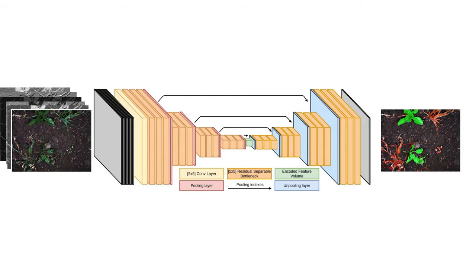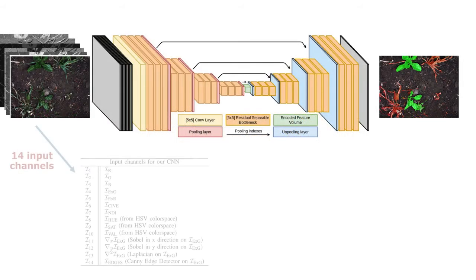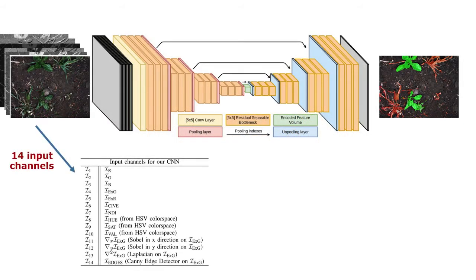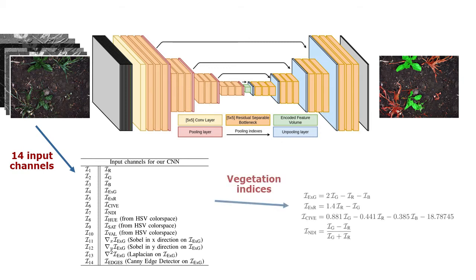These representations include different color spaces, gradients, edges, and several widely used RGB vegetation indices that are all fed into the CNN as a 14-dimensional input, along with the RGB information.